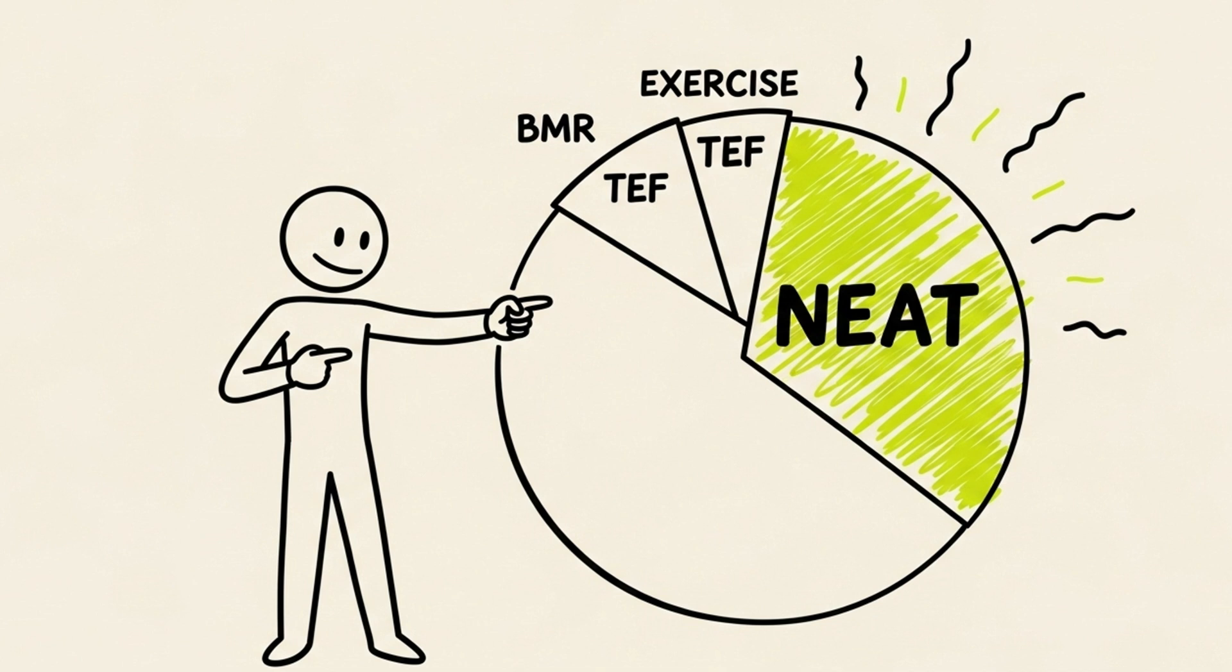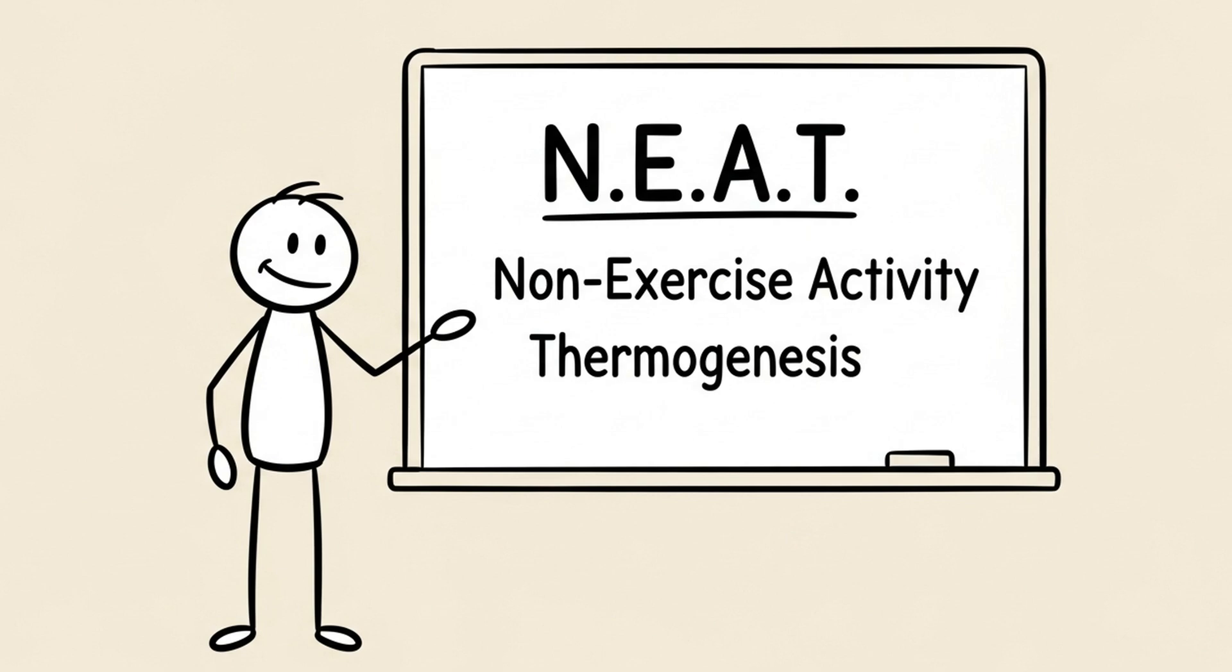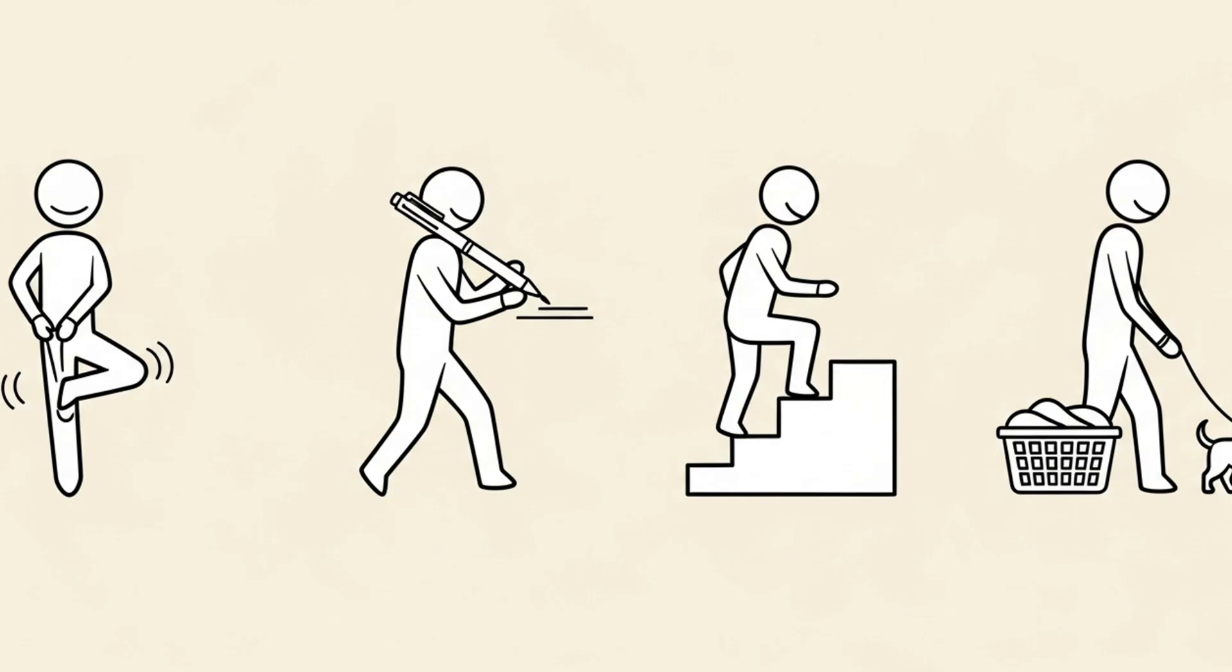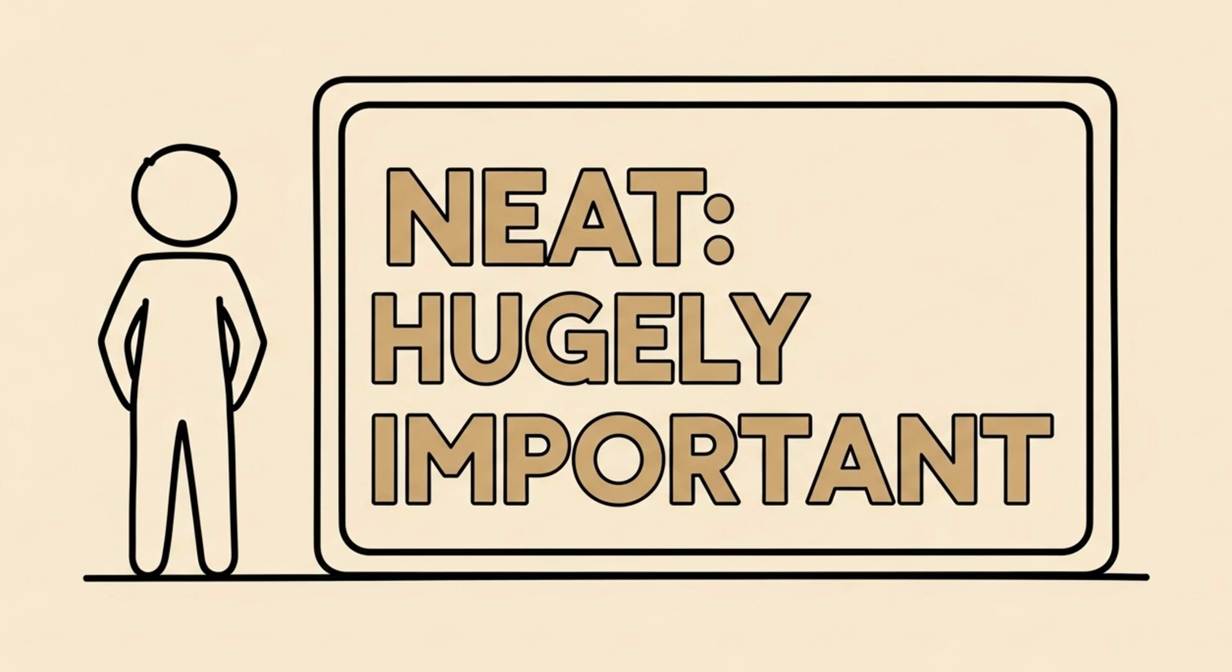Your BMR, the thermic effect of food, your exercise, and the biggest variable of all, NEAT. NEAT stands for Non-Exercise Activity Thermogenesis. It's every calorie you burn that isn't formal exercise, sleeping or eating. Fidgeting your leg, tapping your pen, taking the stairs, doing laundry, walking the dog. NEAT is hugely important.